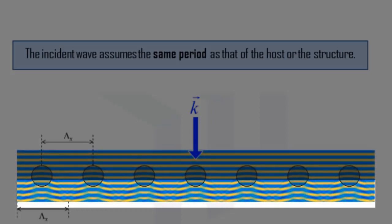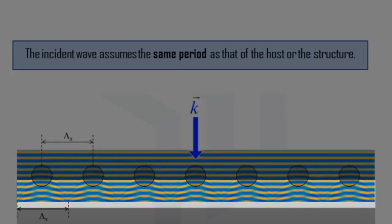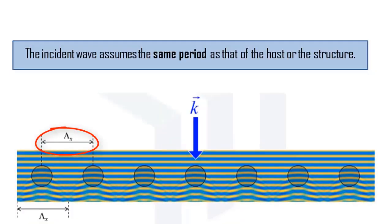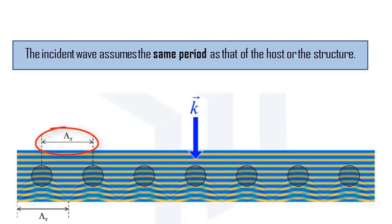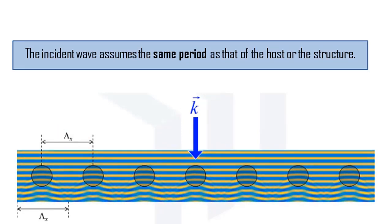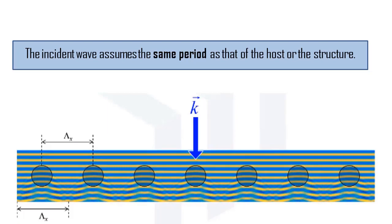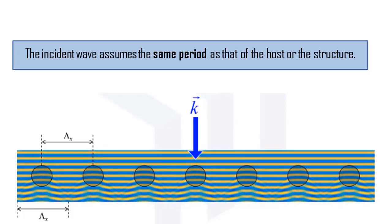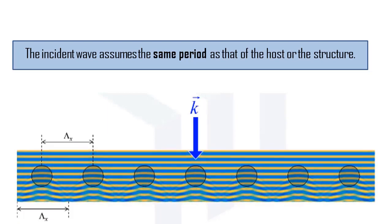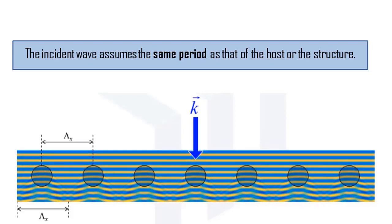We can see that the period of the structure is shown above as lambda sub x. The wave, after it encounters this structure, assumes the same period lambda sub x that is shown at the bottom. This is precisely the reason why diffraction is used to probe the structural properties of crystals, as the diffraction pattern reveals information about the periodic properties of the crystals.